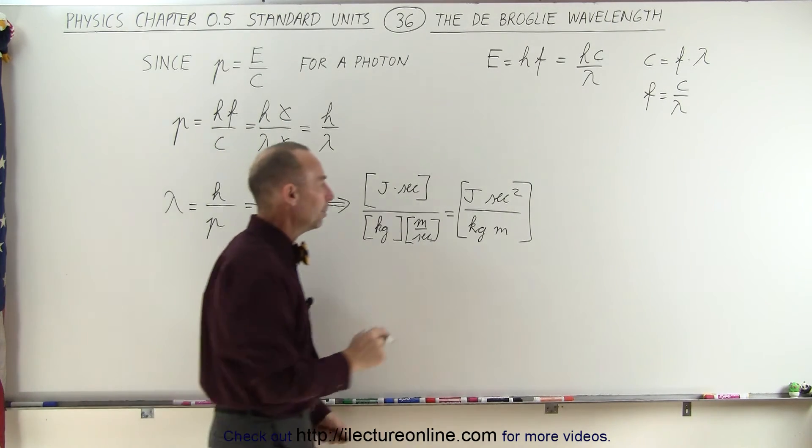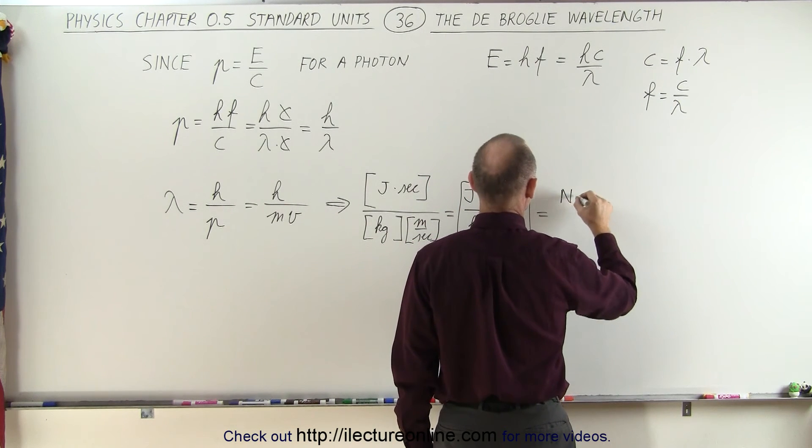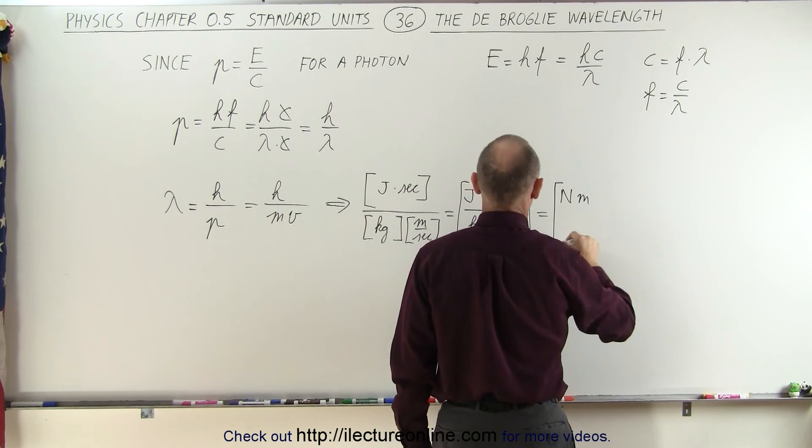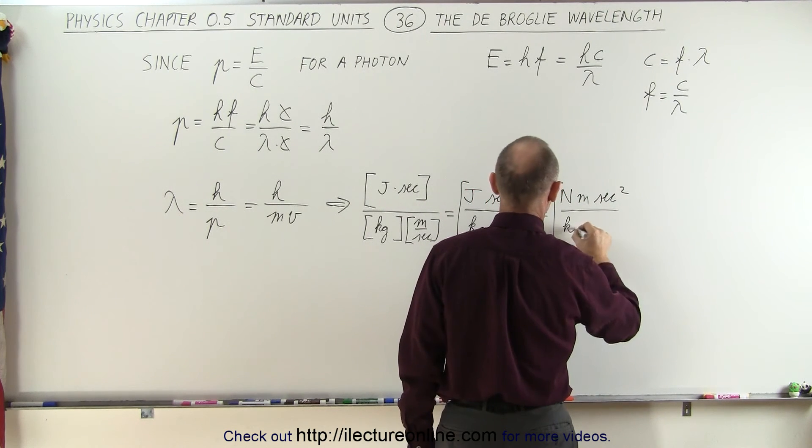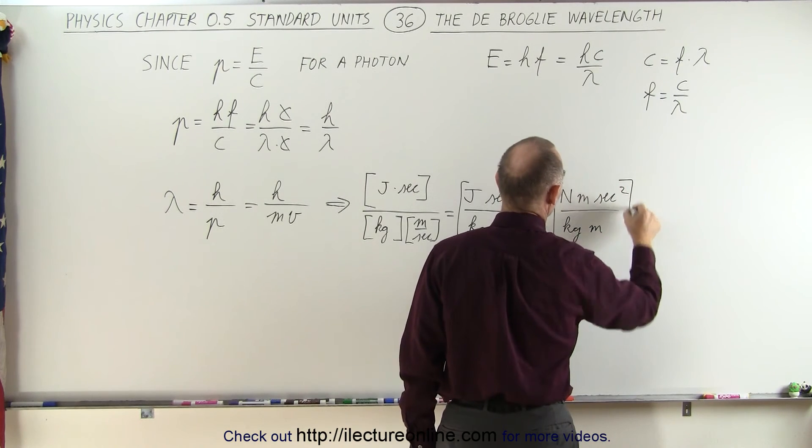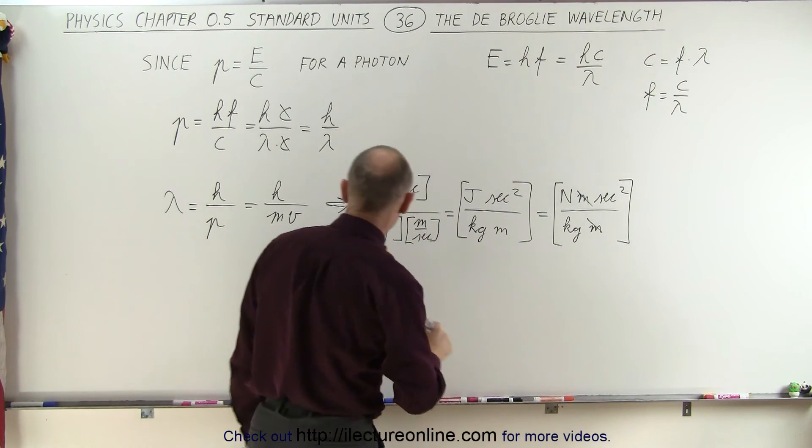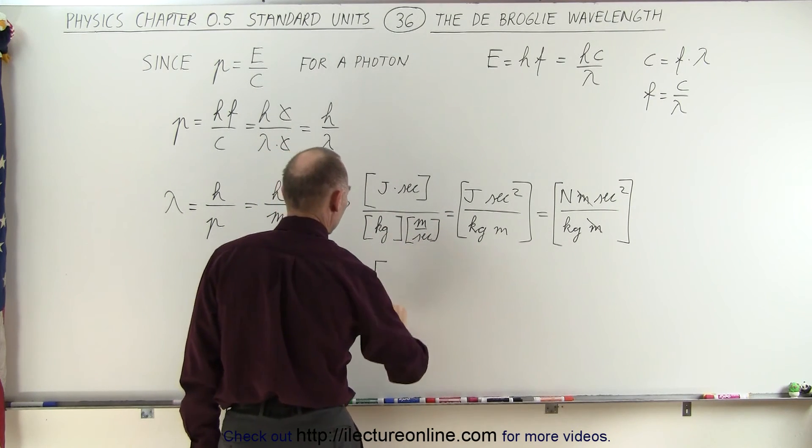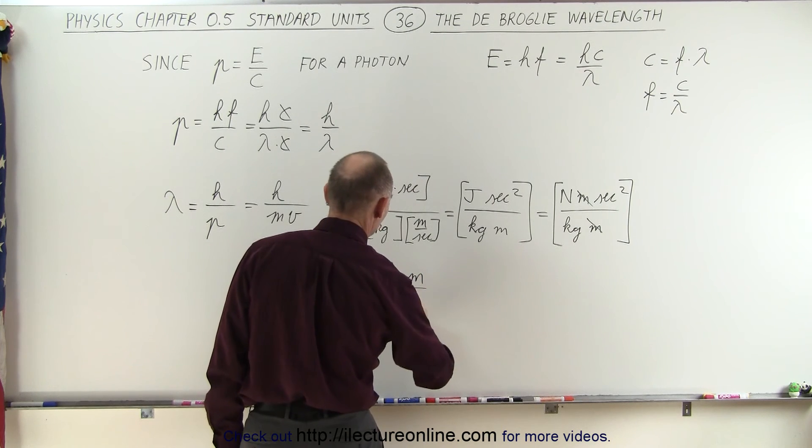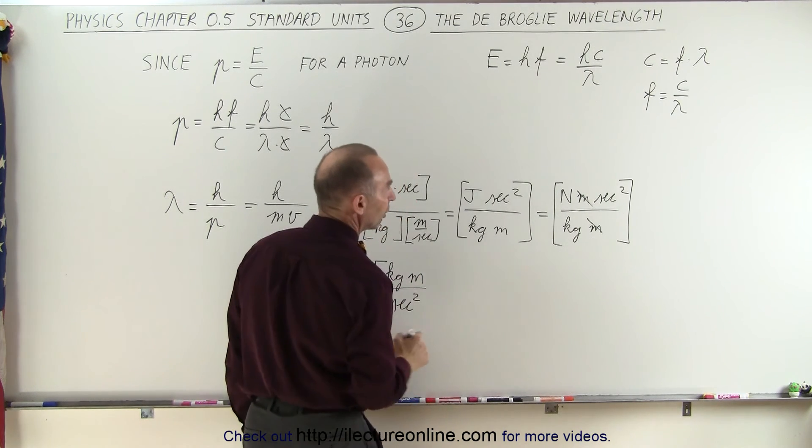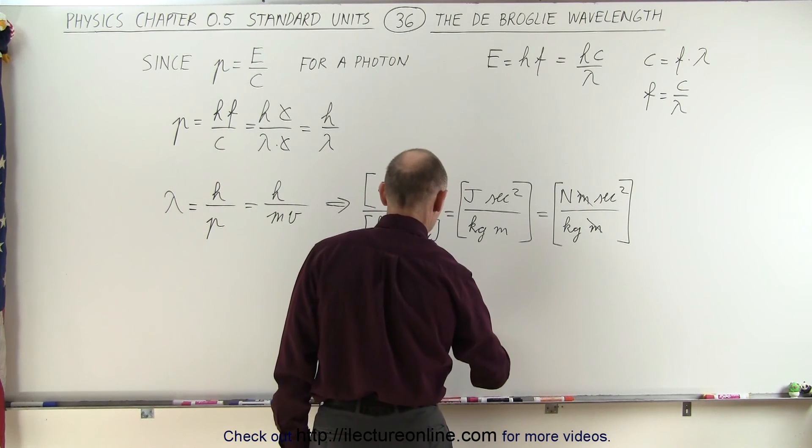But let's clean it up a little bit more. We know that joules is a Newton meter, and we have second squared in the numerator divided by kilogram meter in the denominator, and so meters cancel out. Now, we can convert newtons to what newtons is equal to. This is equal to kilograms meters per second squared, instead of newtons. We still have a second squared in the numerator, and we have a kilogram in the denominator.